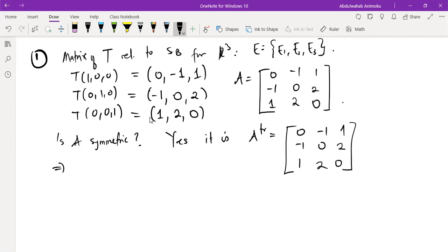When A is symmetric, it means T is equal to T star, the adjoint of the transformation. They are the same. So we say that T is self-adjoint.